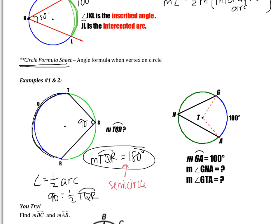Looking at example two, we are told that the measure of arc GA is 100 degrees. We are asked to find the measure of angle GNA and GTA. Starting with GNA. GNA is an inscribed angle because its vertex is on the circle. That means that the angle will be half of the arc. If arc GA is 100 degrees, then angle GNA is going to be 50 degrees.